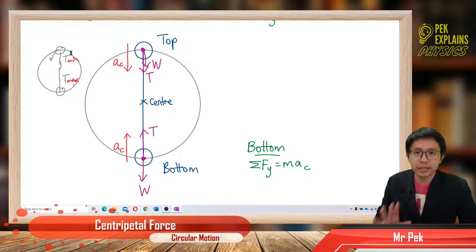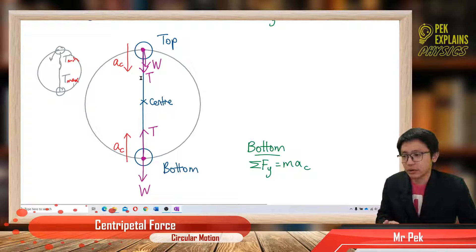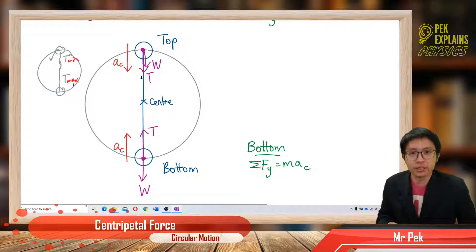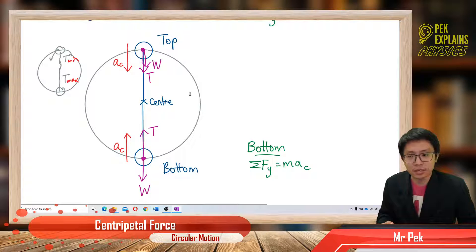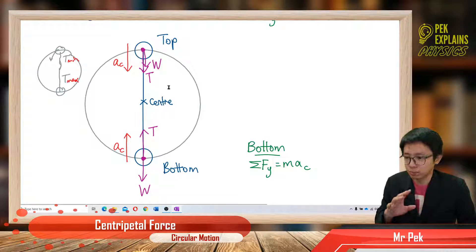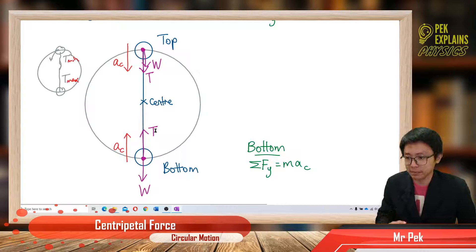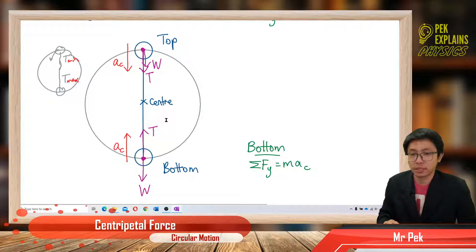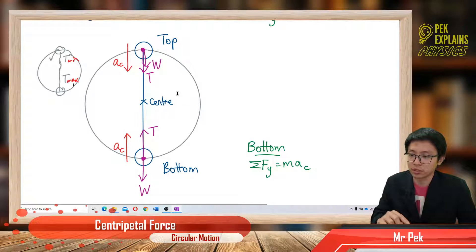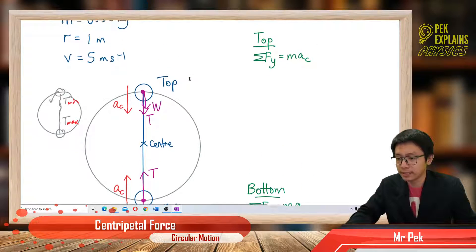Technically, we need to show the calculation to prove that the top has minimum tension and the bottom has maximum tension. To prove minimum and maximum, you need to make equations.